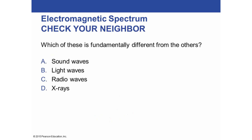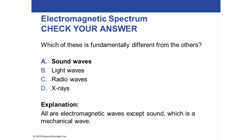Which of these types of waves is fundamentally different from the others: sound waves, light waves, radio waves, or x-rays? The answer is sound waves. All the rest are electromagnetic waves — they are transverse waves with an up-and-down pattern. Sound waves are longitudinal waves with a back-and-forth motion instead of up and down.